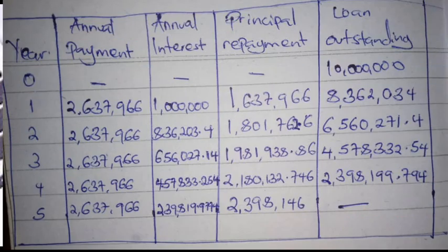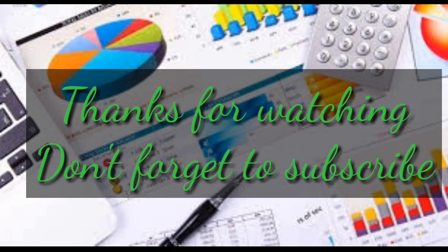We repeat the same process for years three, four, and five. You must make sure that by the end of the last year, the outstanding balance is zero. That is the loan amortization schedule as asked in the question. Thanks for watching — don't forget to subscribe, like, comment, and share. In the next video we will be talking about personal finance, and this has been the end of the introduction to financial management and time value of money.